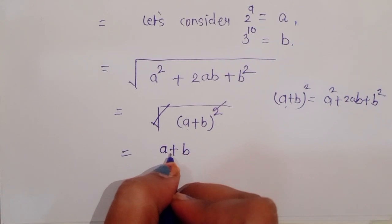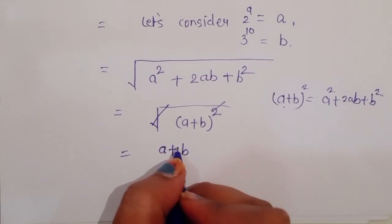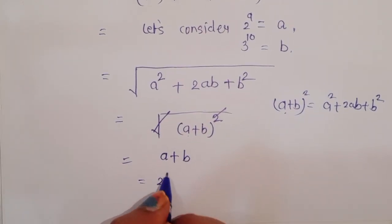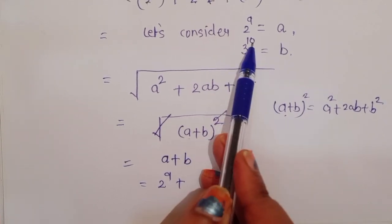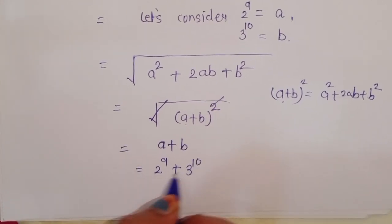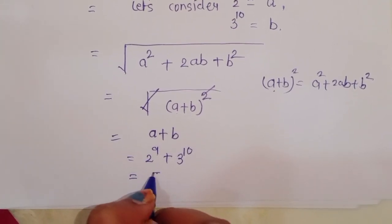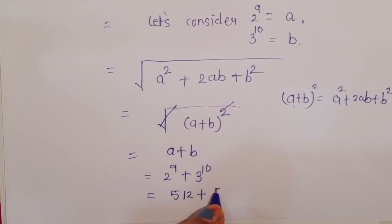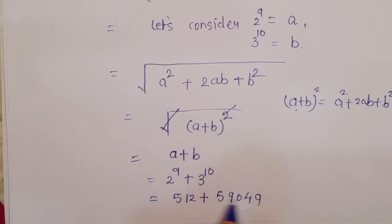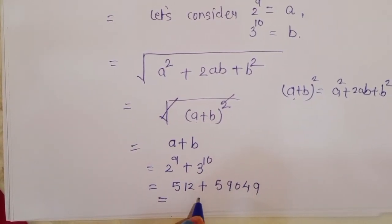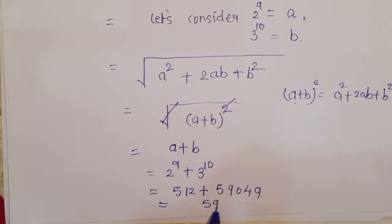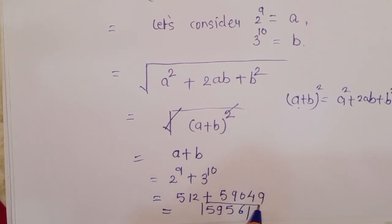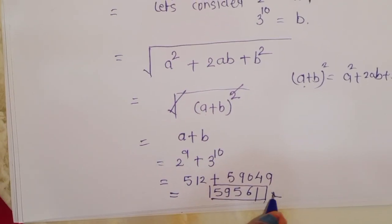Now, substituting back: a equals 2 power 9 equals 512, and b equals 3 power 10 equals 59,049. Adding these together, we get 59,561. So the answer is 59,561. Thank you.